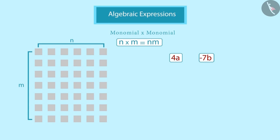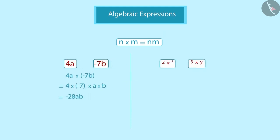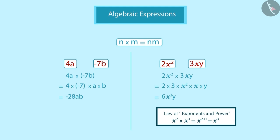Now look at these two monomials. When multiplying such monomials, we multiply the coefficients first and then their algebraic factors, and we get the product. Once again, we multiply the coefficient first and then the algebraic factors. If we look at these two steps carefully, we see that the powers of variable x are added based on the rules for the addition of powers and exponents.